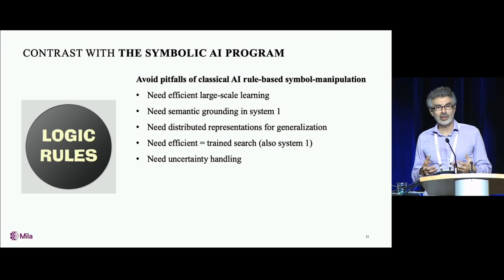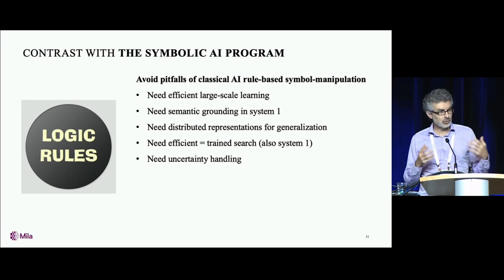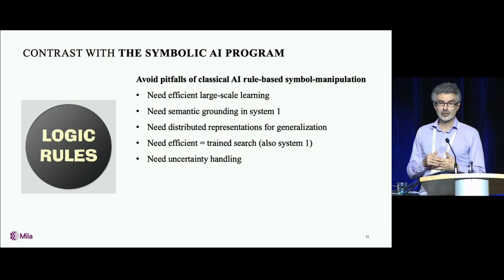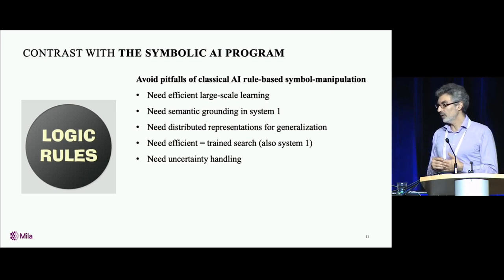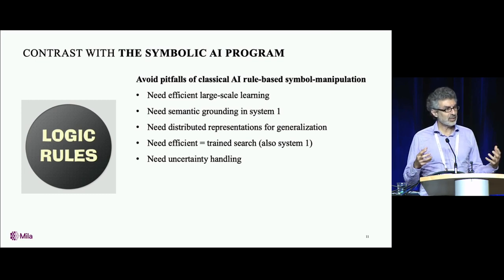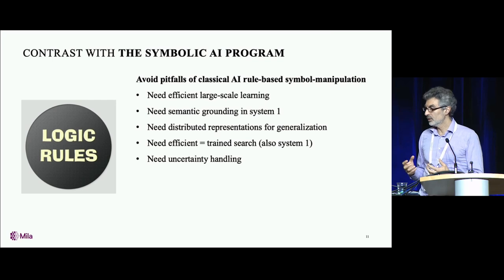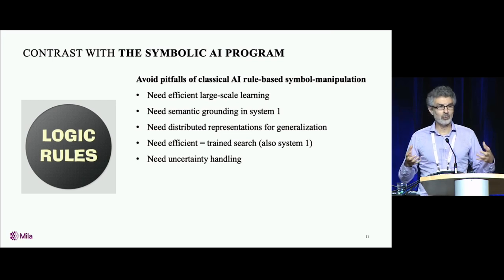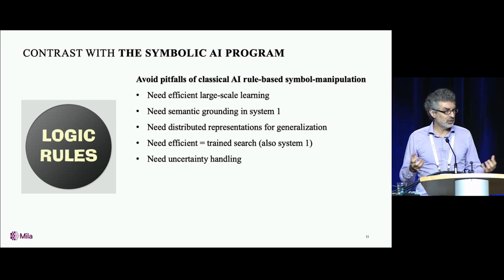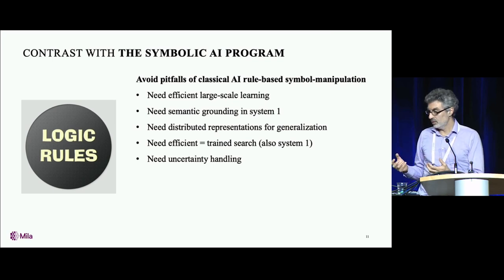In the work that we need to do in order to achieve system two performance, we want to avoid some of these pitfalls. We want to make sure that those systems will be able to generalize efficiently at large scale. The concepts that we want to learn need to be grounded with system one in low-level perception and action. We want to keep the power of generalization of the distributed representations.